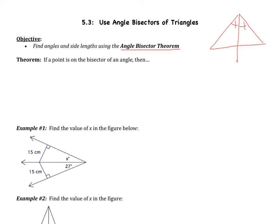Every triangle is going to have three of these because you have three angles. Here's the angle bisector theorem: if a point is on the bisector of an angle, then it is equidistant from the sides of the angle.